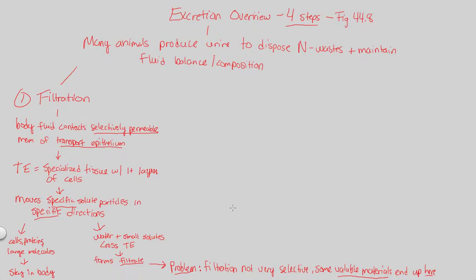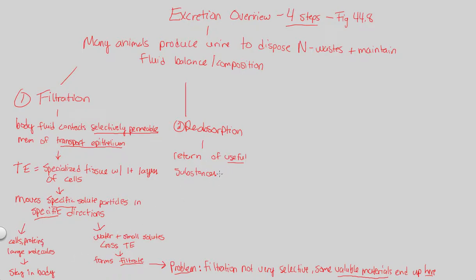That's where step two comes in: we need to save those valuable materials. Step two is known as reabsorption. Valuable materials are leaving, so we're going to reabsorb them back into the internal body environment. Reabsorption is the return of useful substances — definitely not nitrogenous waste or anything we want to get rid of, but things like cells, proteins, and large molecules that we want to keep. We return them from the filtrate back into the internal body environment, specifically right back into the blood.